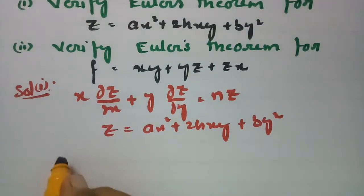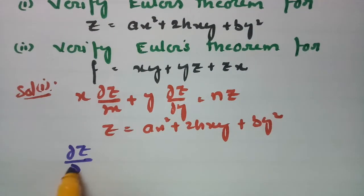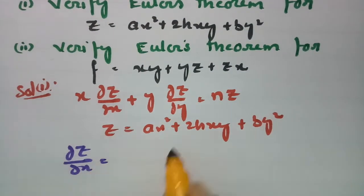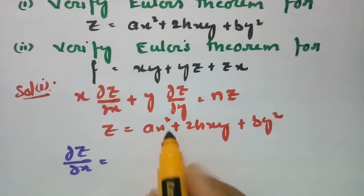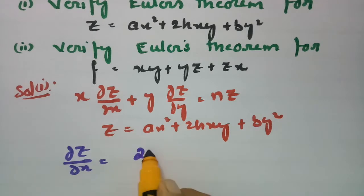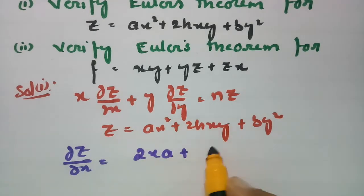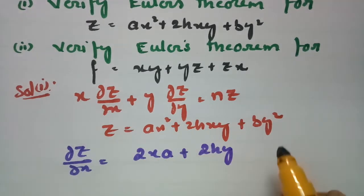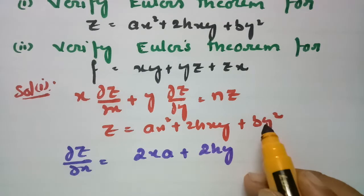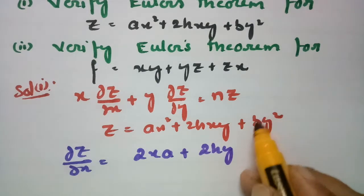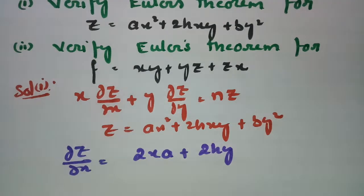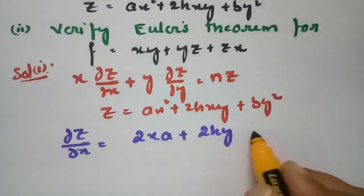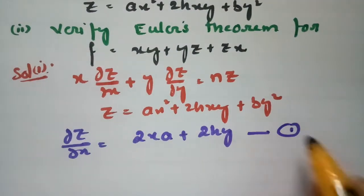The derivative with respect to x is straightforward: ∂z/∂x is equal to 2ax for the x² term, plus 2hy for the xy term, and with respect to x, y will be 0. This is equation number 1.